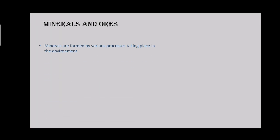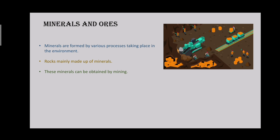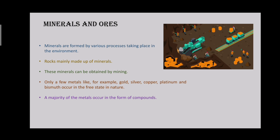Minerals are solid substances that are present in nature and can be made of one element or more elements combined together. Gold, silver, and carbon are elements that form minerals on their own — that is why they are called native elements. These minerals are formed by various processes taking place in the environment and are obtained by mining. Minerals that contain a high proportion of metals are called ores.